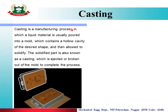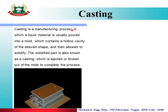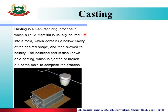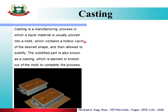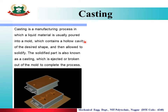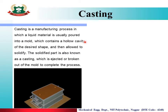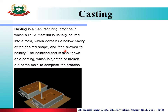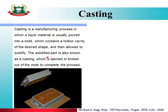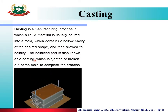Casting is a manufacturing process in which a liquid metal material is poured into a mold. The mold contains a hollow cavity of a desired shape, and then the material is allowed to solidify. The solidified part is also known as a casting product.